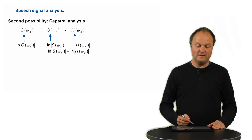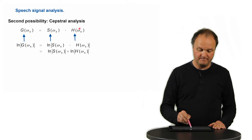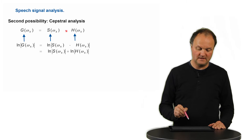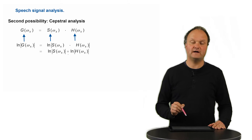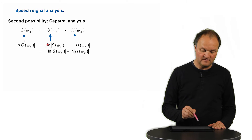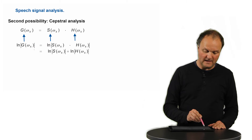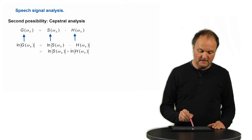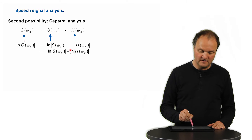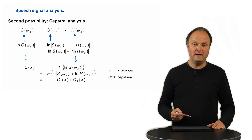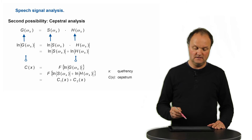Now we can separate these two constituents with a function which makes this multiplication a sum of two constituents, and this function is actually the logarithm. We apply the natural logarithm to the base of E and apply it to the absolute value of this complex spectrum. Then we can separate this multiplication into a sum of two logarithms. We are still in the frequency domain, but in a kind of logarithmic frequency domain. And then we can transform that back into the time domain using another discrete Fourier transform.